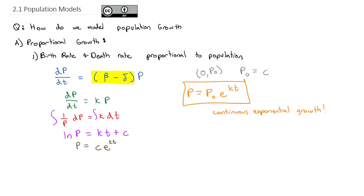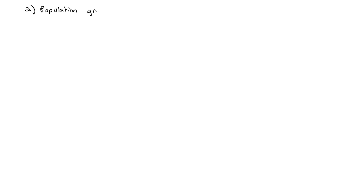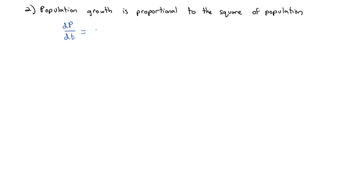We can alter this situation slightly. Let's say instead of saying the birth and death rate — the growth rate — is proportional to the population, rather than a direct proportion, let's say that the population growth is actually proportional to the square of the population. How does that change things? Now the change in the population with respect to time is equal to a constant — that's what proportional means — times the square of the population. So this gives us a slightly different but still separable differential equation to solve.